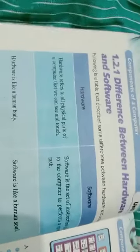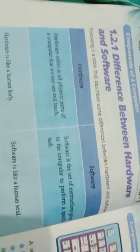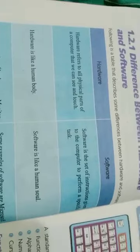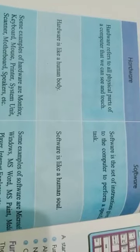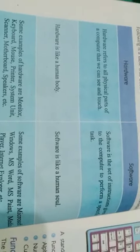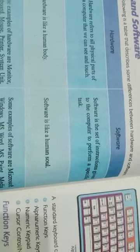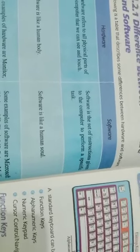Following is a table that describes some differences between hardware and software. Software is the set of instructions given to the computer to perform a specific task.